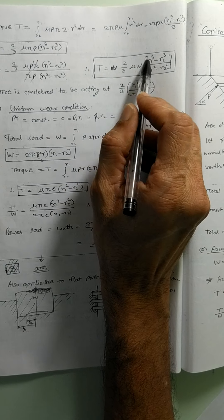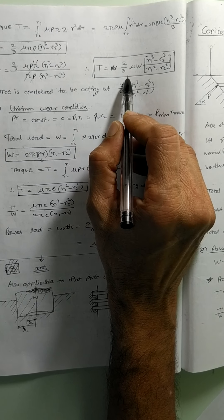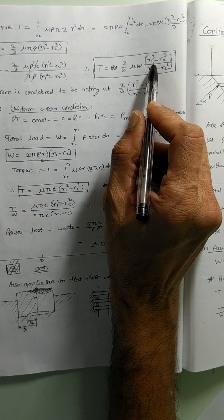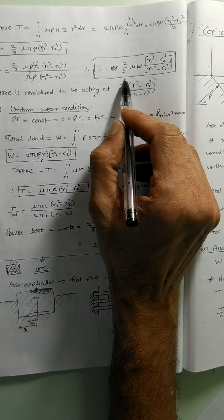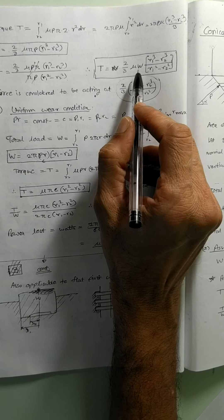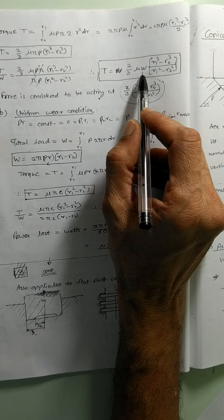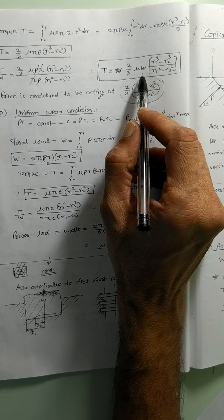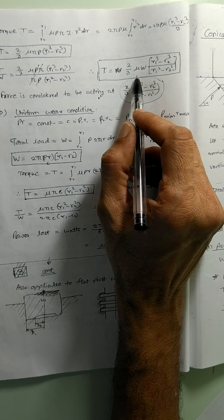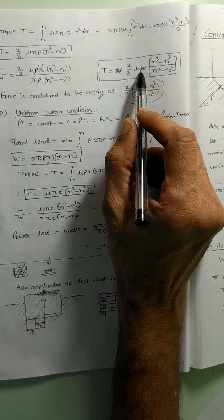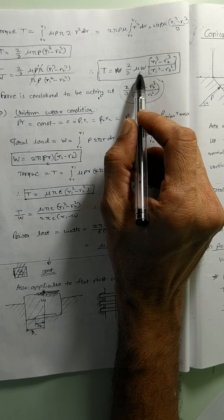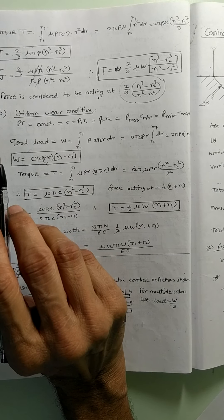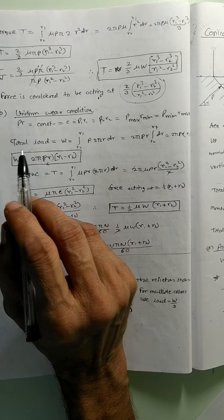The effective radius is (2/3) times (R1 cubed minus R2 cubed) divided by (R1 squared minus R2 squared). This is the effective radius at which the entire load is said to be acting effectively — not real, but for mathematical purposes. We say there is a point load acting at this distance, and that load times mu is the frictional force, and frictional force times this radius becomes the torque. So that was the first case of uniform pressure.